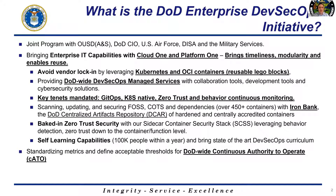Self-learning capabilities are foundational for the success of the department. We have about 100,000 people we have to train every year. We want to bring a state-of-the-art DevSecOps curriculum with unbiased content, partnering with the Linux Foundation, the Cloud Native Computing Foundation, and O'Reilly Books to bring a broad and diverse set of training content. Everything we do is about metrics and acceptable thresholds in the CI/CD pipeline to break the build for safety and security reasons. We created the concept of a continuous authority to operate — a continuous ATO — that enables us to release software multiple times a day.